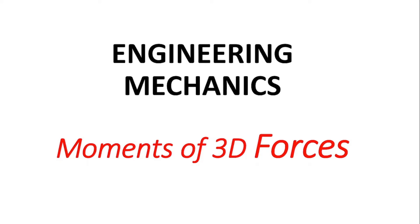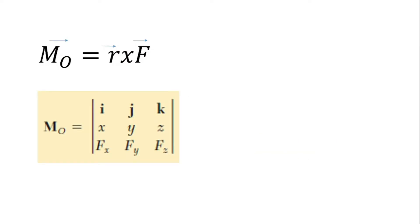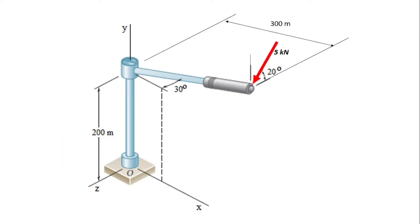Welcome to the channel. In this video we're quickly going to run through an example of finding the moment of 3D forces — that is, finding the moment of a force acting in space about a particular point. To recap, a moment is the cross product of the position vector and the force itself, which in component form is evaluated by finding the determinant of the matrix containing the position vector and the force.